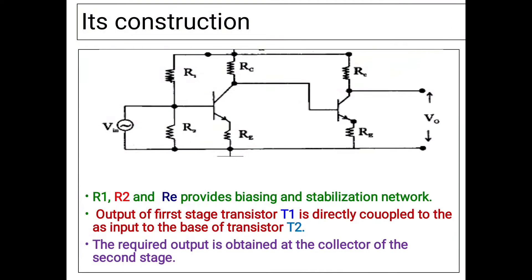Now we will discuss about the construction of the direct coupled amplifier circuit. The circuit diagram is given here. In the circuit diagram, R1, R2, and RE provide the stabilizing and biasing network.